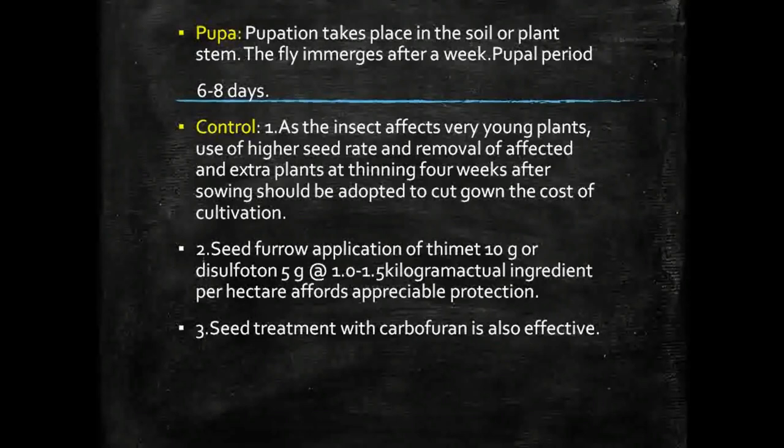Pupation takes place in the soil or plant stem. The fly emerges after about one week. The pupal period lasts for six to eight days.